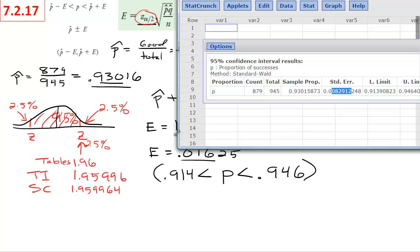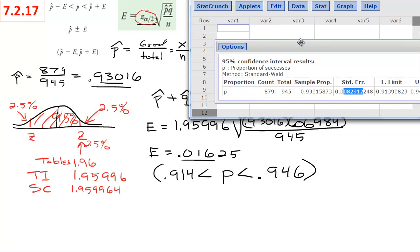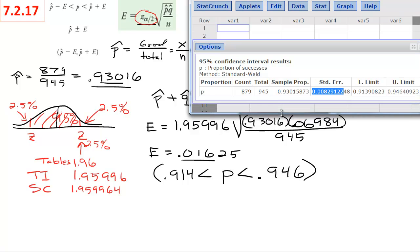If we look here and make it smaller so we can see everything, this square root piece is your standard error piece. If you were to do that math, this piece hidden under here, if we just did this bit, we would have gotten this number. If we took that number and multiplied it by 1.95996, that is what would have given us E.